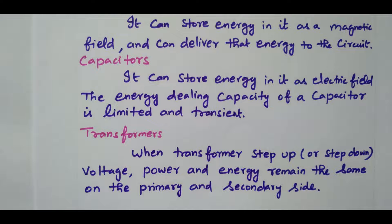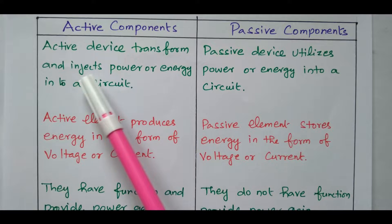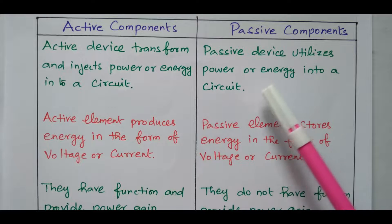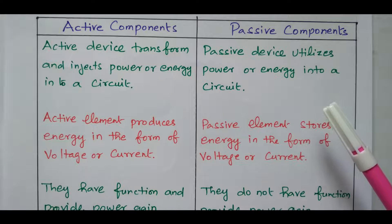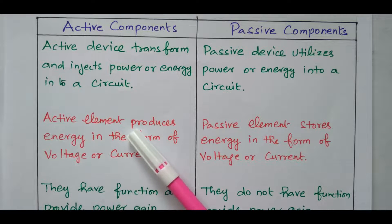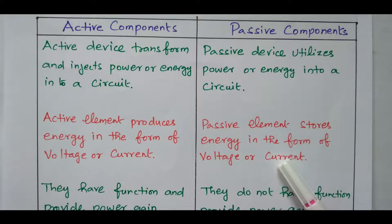Now we will compare active and passive components. The active component transforms and injects power or energy into the circuit — it delivers energy or power to the circuit. But the passive component utilizes the power or energy in the circuit: it will absorb, dissipate as heat, or store in a magnetic field or electric field — it receives the energy. Active elements produce energy in the form of voltage or current, while passive elements store the energy in the form of voltage or current.